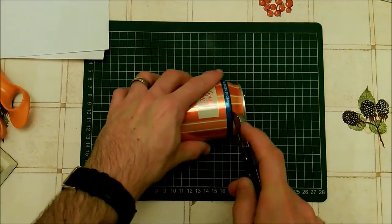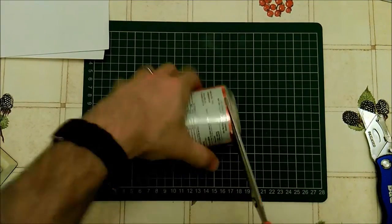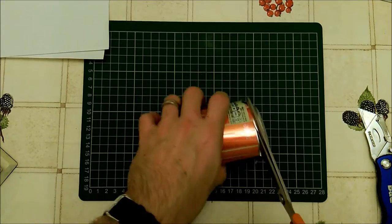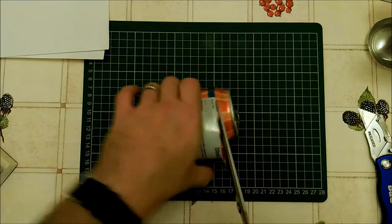First up use your craft knife to pinch two holes in the end of the drinks can, then use your pair of scissors to cut around the outside of the drinks can. Be careful of the sharp edges. Once you've cut off both ends use the scissors to cut down the middle to form one long piece of metal.